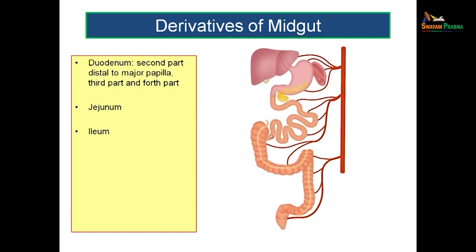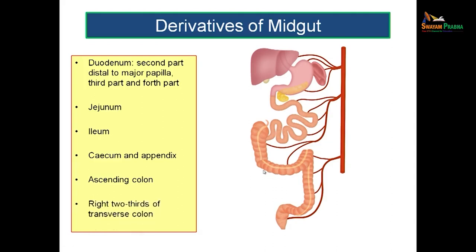The midgut derivatives start from the second part of the duodenum — the part distal to the opening of the major papilla — then the coils of jejunum, the coils of ileum, the cecum and appendix, the ascending colon, and the right two-thirds of the transverse colon, up to the junction of the right two-thirds and left one-third. All these are derived from the midgut.